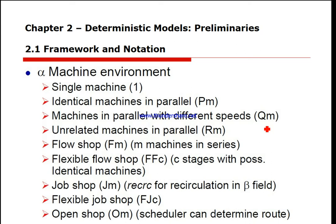In a flexible flow shop, instead of m machines in series, we have c stages in series with a number of identical machines at every stage. So where before we had one machine at stage A, one at B, one at C — now we have several machines at A, several at B, and several at C. We also have the job shop environment.